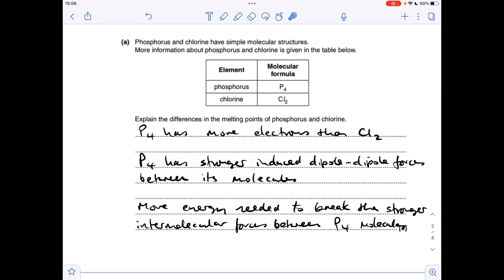Moving on to the next question, so the classic wrong answer here would be to talk about phosphorus having more covalent bonds to break. This has got nothing to do with breaking covalent bonds. It's all about breaking the intermolecular forces between the molecules. So phosphorus, P4, has got more electrons than Cl2. Phosphorus has got 60 electrons in the molecule, and chlorine's got 34.